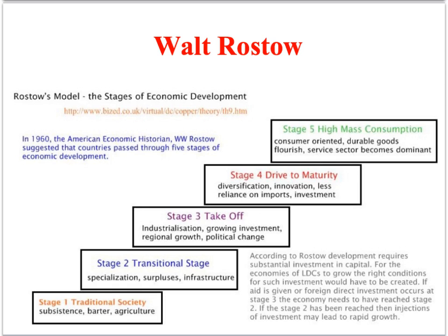The most important name to remember for the exam when discussing this perspective is the American scholar Walt Rostow. Rostow's version of modernisation theory suggested that development should be viewed as an evolutionary process in which poorer countries progress up a development ladder of five different stages. This five-stage model follows the pattern of development that developed capitalist countries had allegedly experienced between the late 18th and 20th centuries.